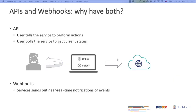You might be wondering, since we talked about the REST API before, why do we need both APIs and webhooks? APIs tell the service to perform an action - we saw that with REST API, we created a new project 'My Little Llama' - and they also allow you to poll the service to get the current status, like how many users you have. Webhooks, on the other hand, send near real-time notifications of events happening on Tableau.